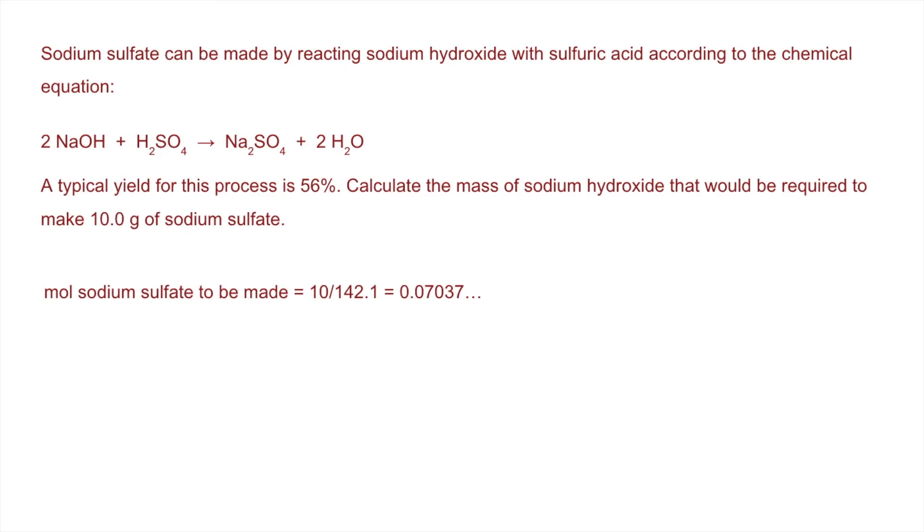Now apply the mole ratio assuming 100% yield. To make one mole of this we need two moles of sodium hydroxide, so to make that many moles of sodium sulfate at 100% yield we need twice as many moles of sodium hydroxide.